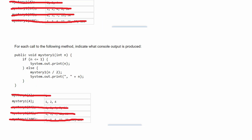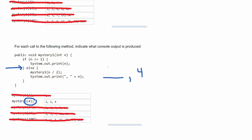For the second question, we're given the parameter four. Since our initial number is four, we're going to have to use our else statement because our number is greater than one. We're going to see that we have recursion right here. So after we look at this recursion, we also need to look at what follows it — we have the system.out.print of a comma and the number itself. Since our number is four currently, we're going to have four and a comma.